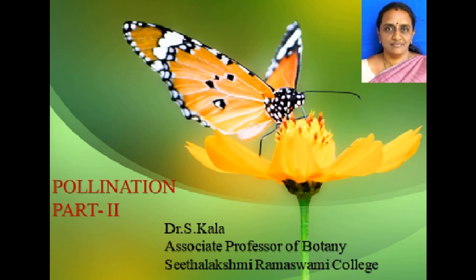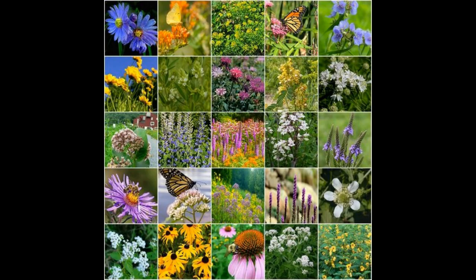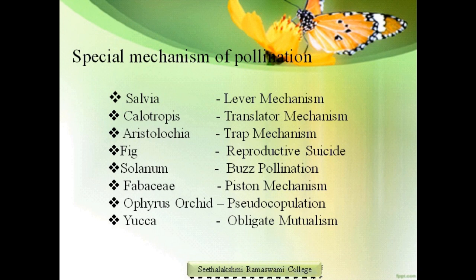Welcome back for the pollination video part 2. Hope you have watched pollination part 1 and understood the concept, types, and agencies of pollination. In this part 2, we will learn about some special mechanisms of pollination. Flowering plants have co-evolved with their pollinators over millions of years, producing a fascinating diversity of floral strategies and pollinator adaptations — including lever mechanism, trap mechanism, translator mechanism, piston mechanism, and more.